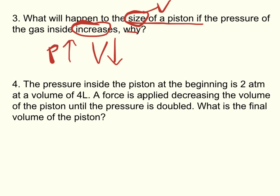Number 4. The piston starts at a pressure of 2 atm and a volume of 4 liters. A force is applied decreasing the volume until the pressure is doubled. So, the new pressure is going to be doubled the old pressure. 2 times 2 gives us 4 atm.